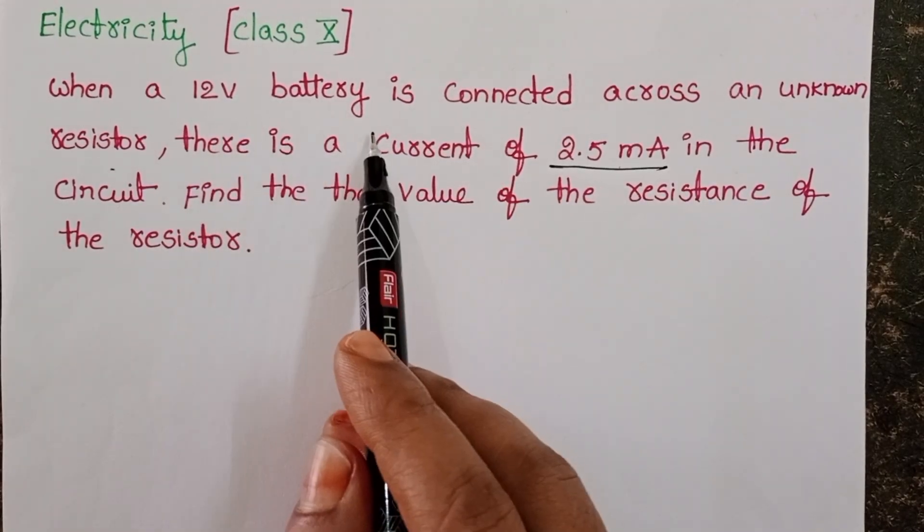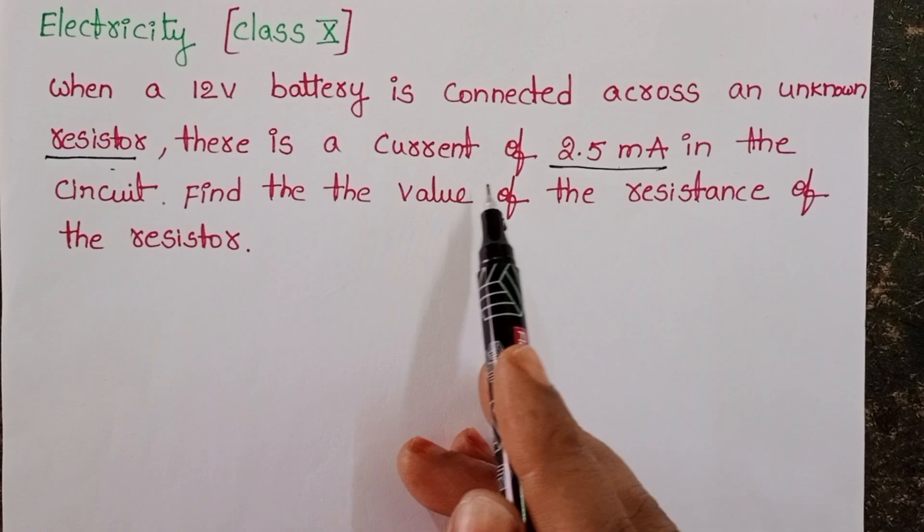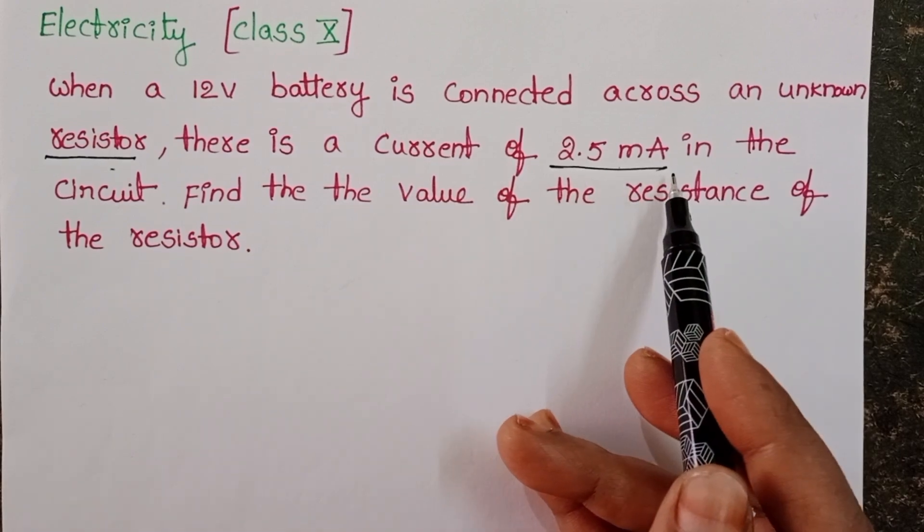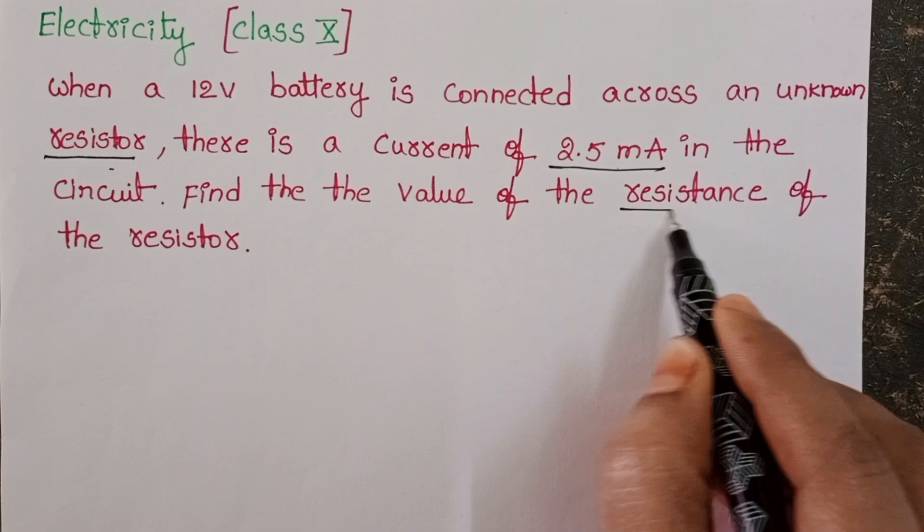When a 12 volt battery is connected across an unknown resistor, there is a current of 2.5 milliamperes in the circuit. Find the value of resistance of the resistor.